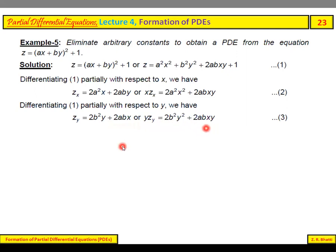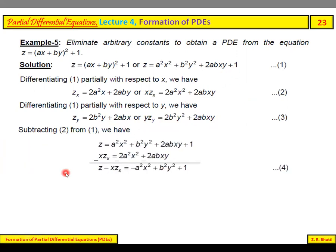Subtracting equation (2) from equation (1), we have z = a²x² + b²y² + 2abxy + 1. From this, we subtract xz_x to eliminate terms.